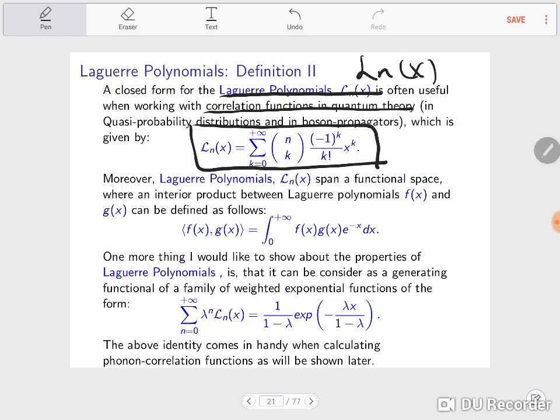What else can we say about the Laguerre polynomials? The Laguerre polynomials also span a functional space, and all functional spaces have some properties. One of them is the interior product between Laguerre polynomials f(x) and g(x).